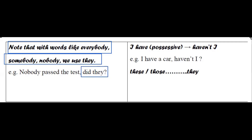When 'have' is used to express possession, it becomes 'haven't' — for example, 'I have a car, haven't I?' 'These' or 'those' become 'they' in the question tag.